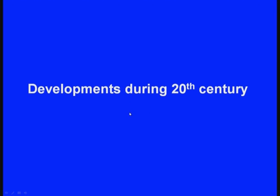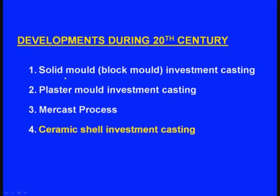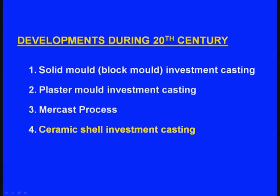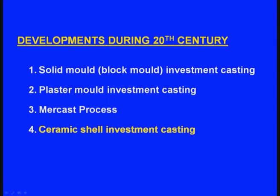In the previous lecture, we have seen the developments of the investment casting process during the 20th century. Initially, the solid mould or block mould investment casting was used, where the entire mould was filled with ceramic material and wax was used as the pattern material. Later, ceramic material was replaced by plaster mould giving better surface finish. Then, the mercast process was developed where mercury was used as the pattern material, but due to problems it is no more in use. Finally, ceramic shell investment casting was developed and has gained importance worldwide.